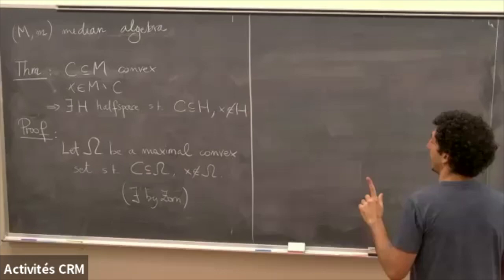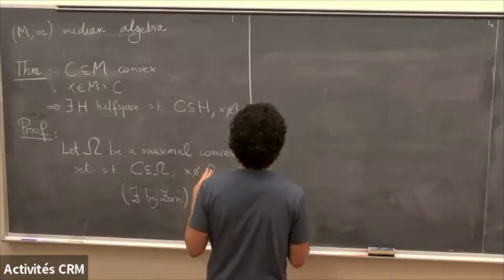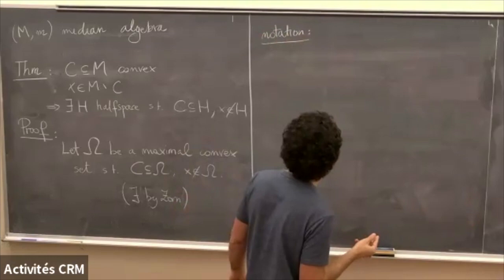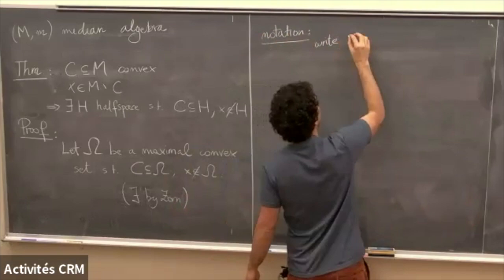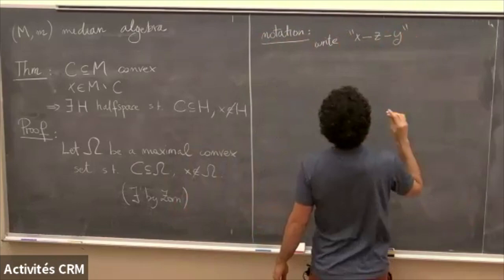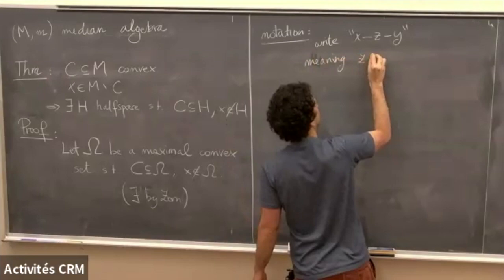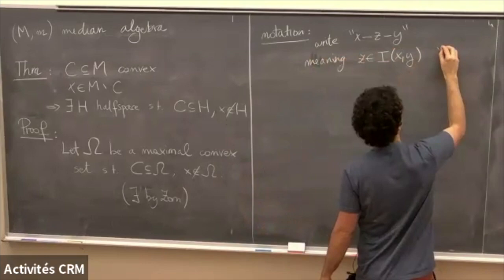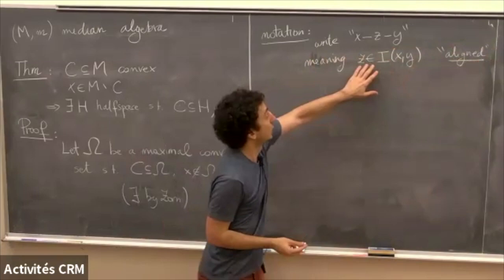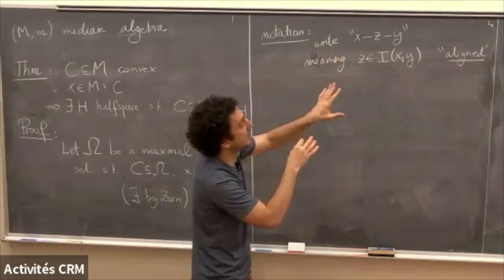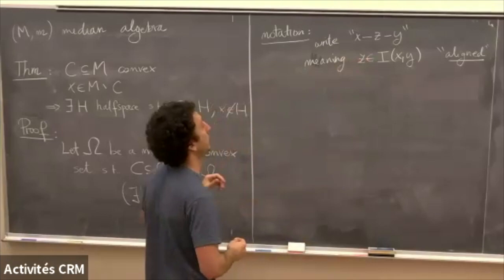I'll state two lemmas to be used, which will be in the exercises. First, some notation: I defined intervals last time, and I write z between x and y to mean z lies in the interval from x to y — think of it as a form of alignment, like z is between x and y.